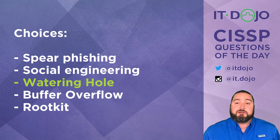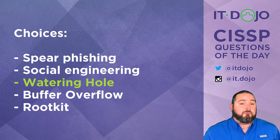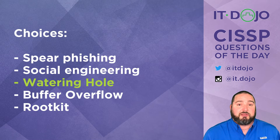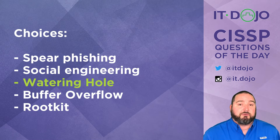The last two choices — buffer overflow and rootkits — are just there to distract you. The description I gave is pretty much your textbook definition of a watering hole attack.